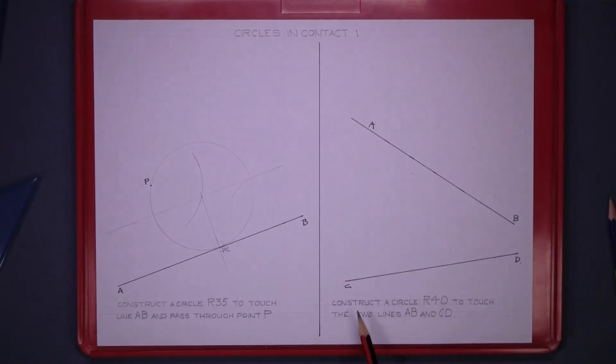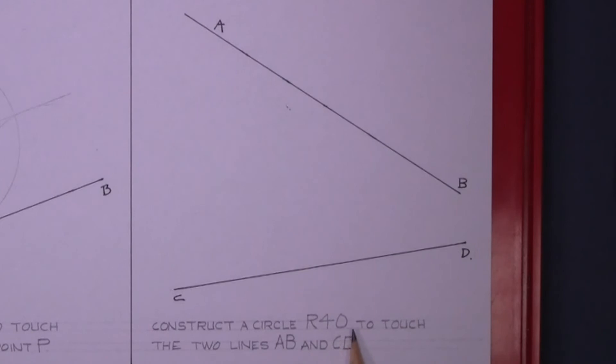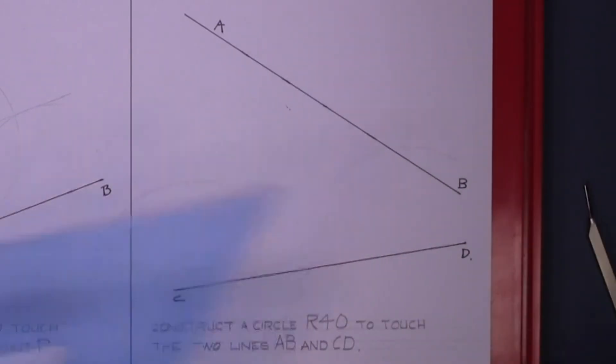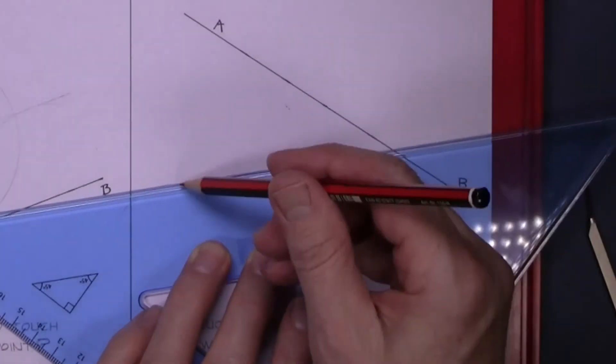The next question is construct a circle 40 millimeter radius to touch the two lines AB and CD. So we have to set the compass to 40 millimeters, mark an arc as we've done previously, draw your line.